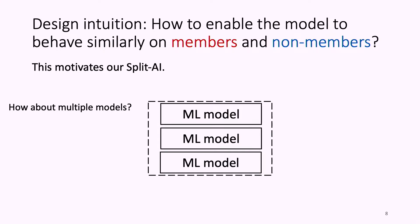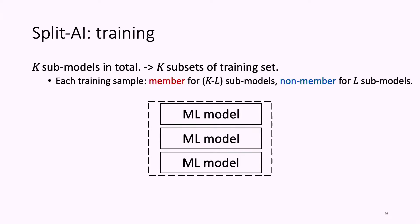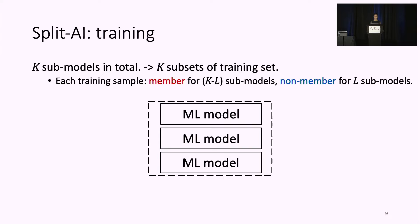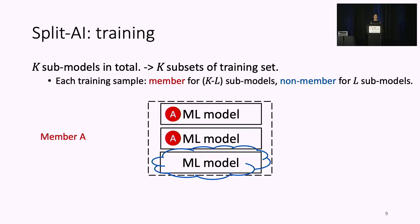Here is the training procedure in Splitter-I. We train K sub-models in total, requiring K subsets. Each training sample will only appear in K-L of the K subsets, so a training sample is a member for K-L sub-models and a non-member for the remaining L sub-models. For example, consider A as a member sample used to train the top and middle models — A is therefore a non-member for the bottom model. After generating the subsets, we train each sub-model with one subset.